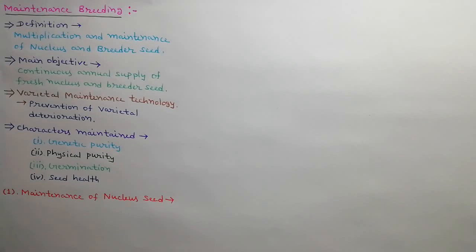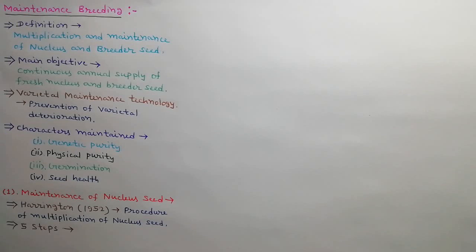First of all we will discuss the maintenance of nucleus seed. Harrington in 1952 developed the method of multiplication of nucleus seed. There are five main steps in nucleus seed production.